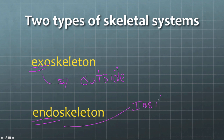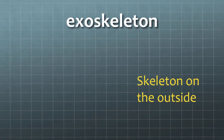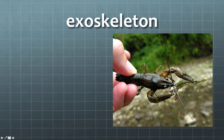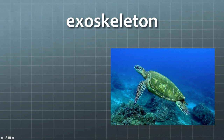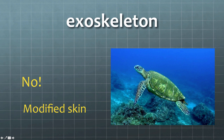Look closely at the prefixes: exo means outside, and endo means inside. Let's talk first about an exoskeleton — like a crayfish or a crab, which has its skeleton on the outside. Now what about a turtle? Does it have an exoskeleton? The answer is no — a turtle's shell is actually a modified skin, and its skeleton is an endoskeleton.